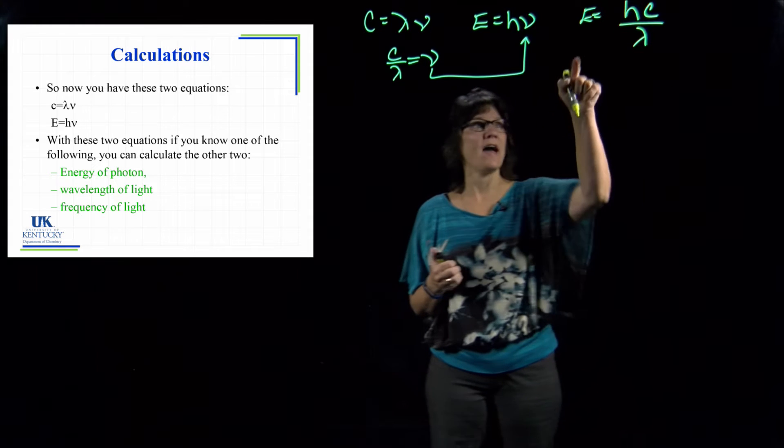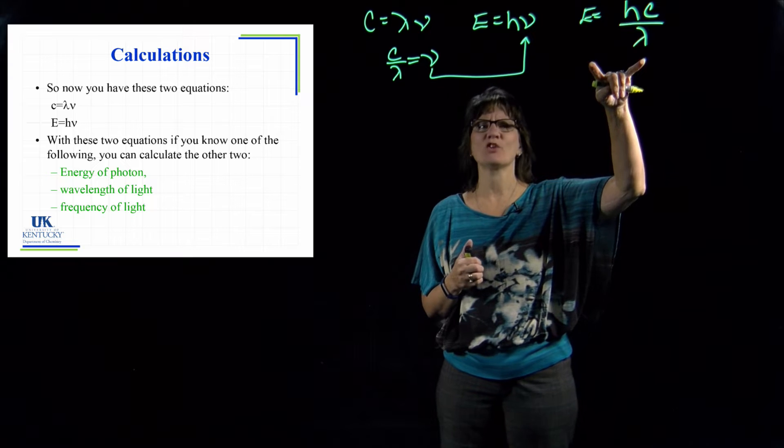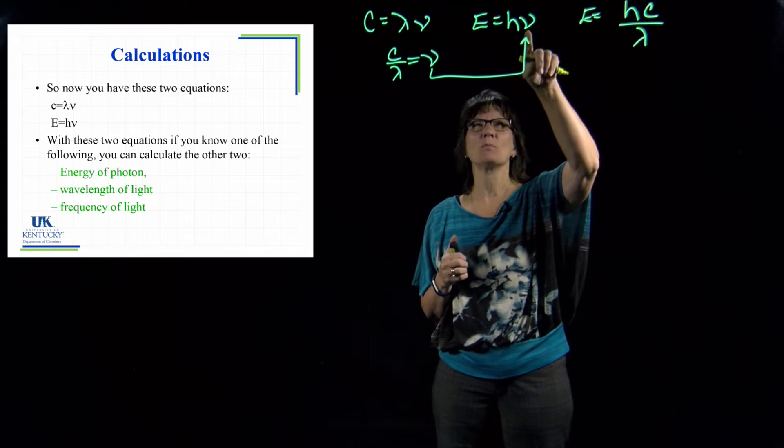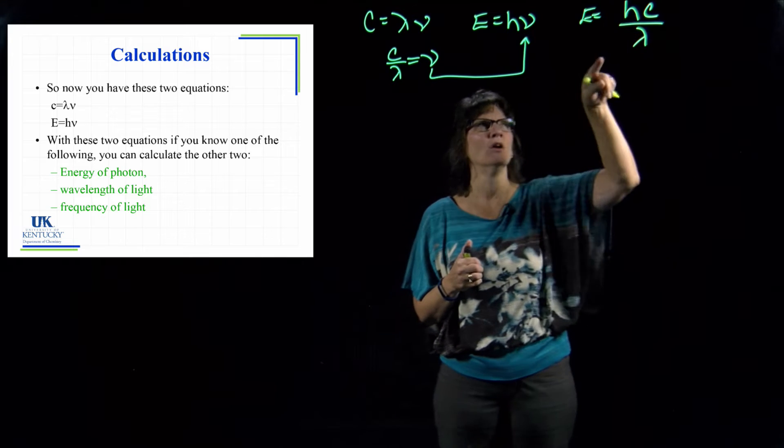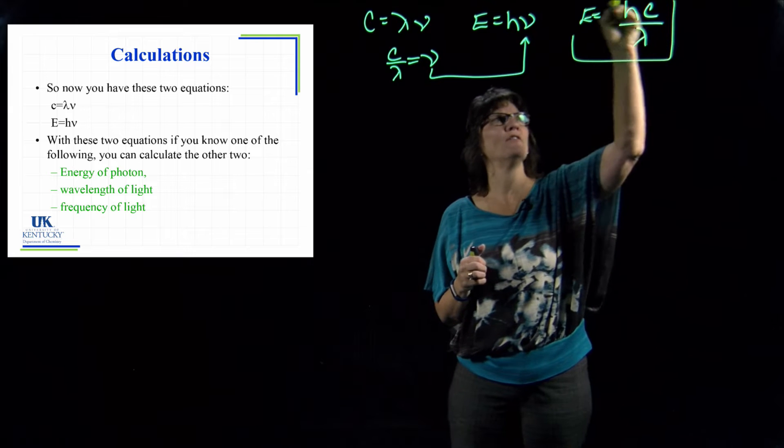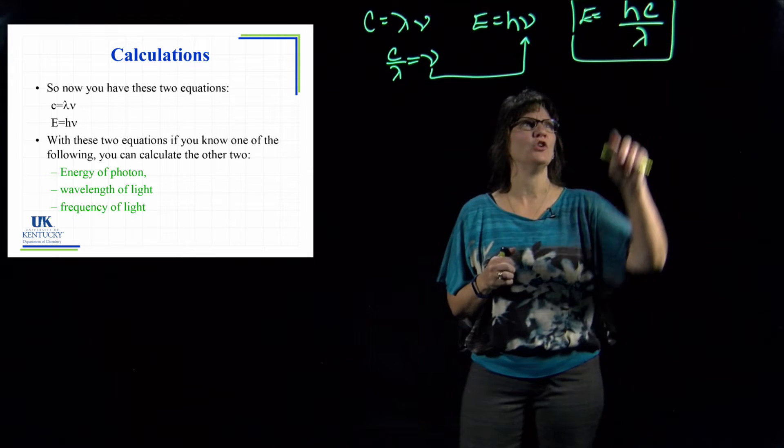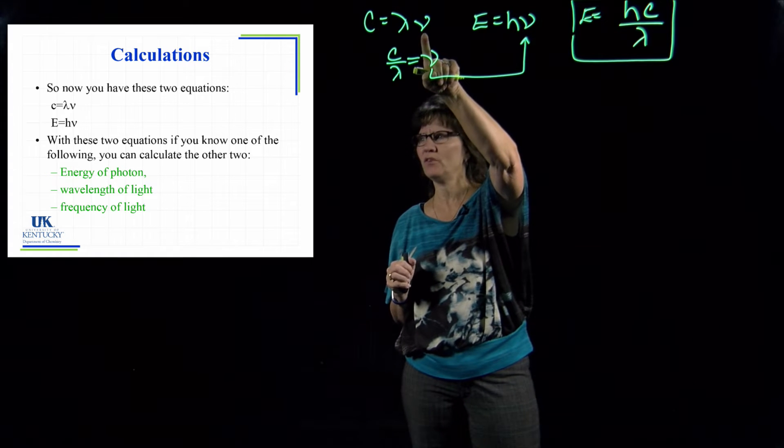So you're going to see very often this equation written, and when you're doing your homework and you pull up hints, they'll say use this equation. That equation is just derived from those two. If I ever write this equation down, it's because in my mind I'm just replacing the frequency. If I have the wavelength, I'll get frequency and then plug my frequency in here and then I can get my energy.